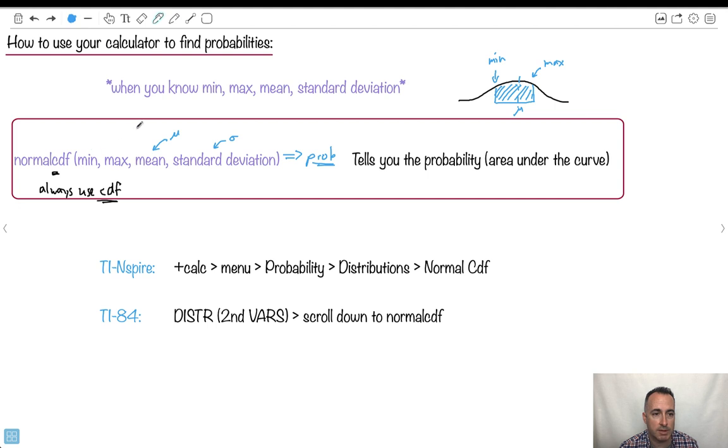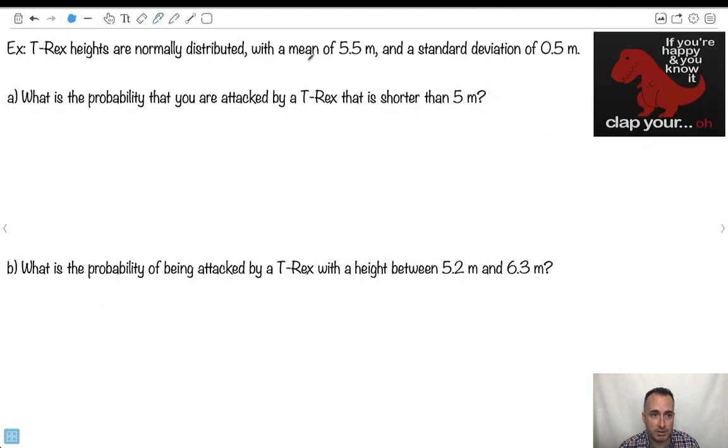You have to know the min and the max, the mean and standard deviation. So maybe that's sigma here. Once you know the min, max, mean, and standard deviation, then you can tell the probability. And that's how we do it. So let's do an example with the Tyrannosaurus Rexes. If you're happy and you know it, clap here. Oh, his arms are too short. So we're going to assume that T-Rex heights are normally distributed with a mean of 5.5 meters and a standard deviation of 0.5.